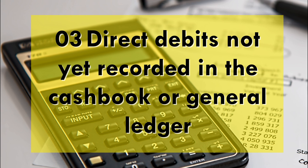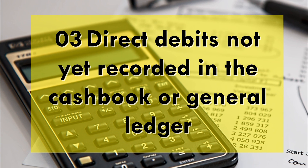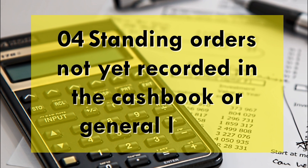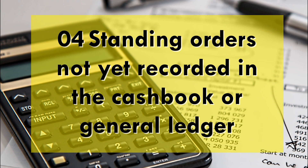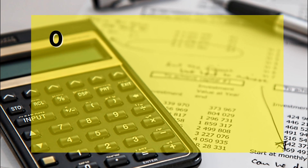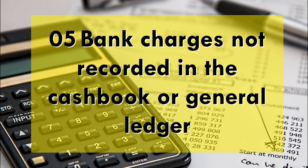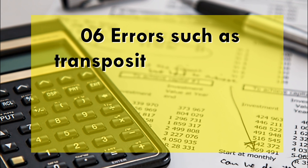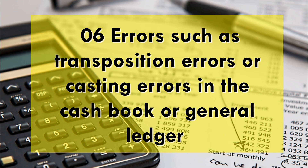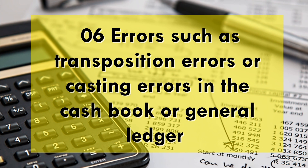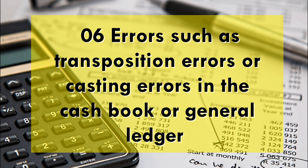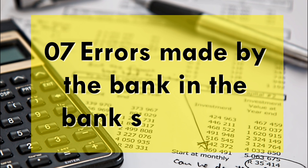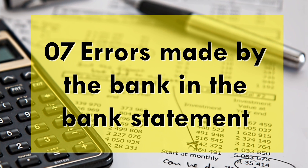Number three, direct debits not yet recorded in the cash book or general ledger. Number four, standing orders not yet recorded in the cash book or general ledger. Number five, bank charges not recorded in the cash book or general ledger. Number six, errors such as transposition errors or casting errors in the cash book or general ledger. Number seven, errors made by the bank in the bank statement.